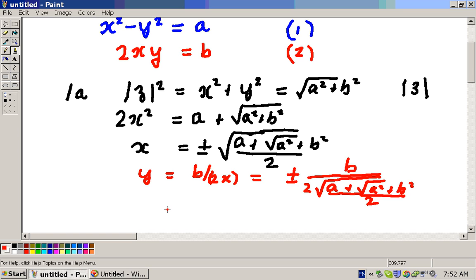And that's equal to, tidy it up a bit, plus or minus B divided by the square root. So if we take the 2 inside the square root, that becomes 4, which cancels with the 2, and we'll just get 2 into A plus the square root of A squared plus B squared.